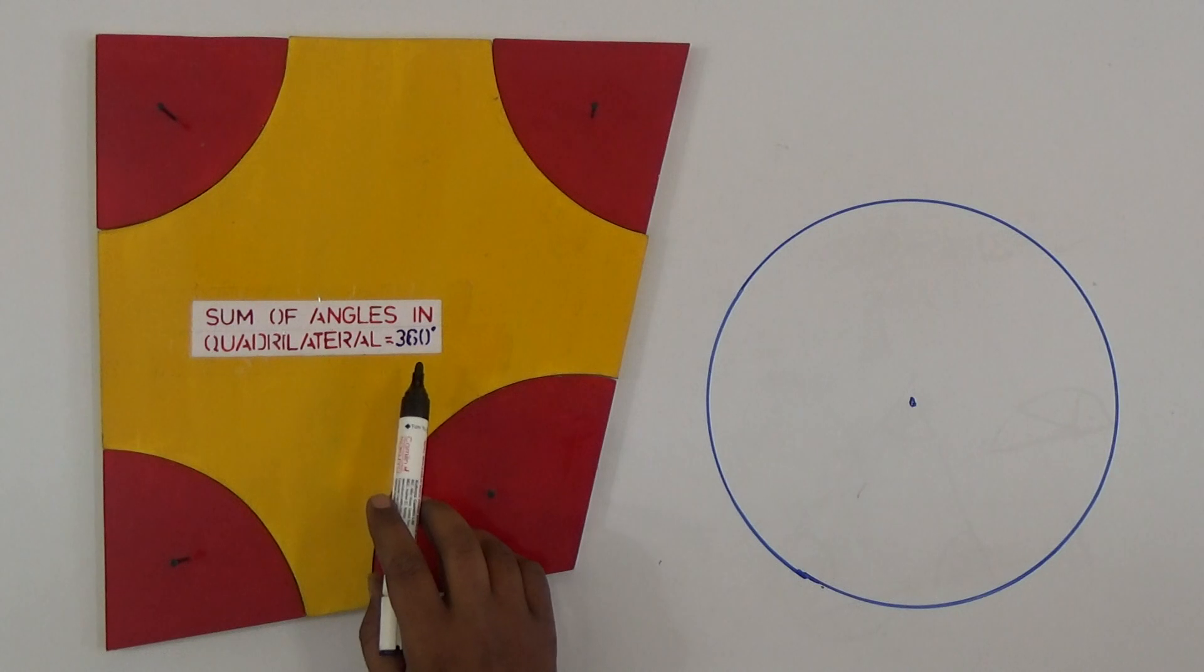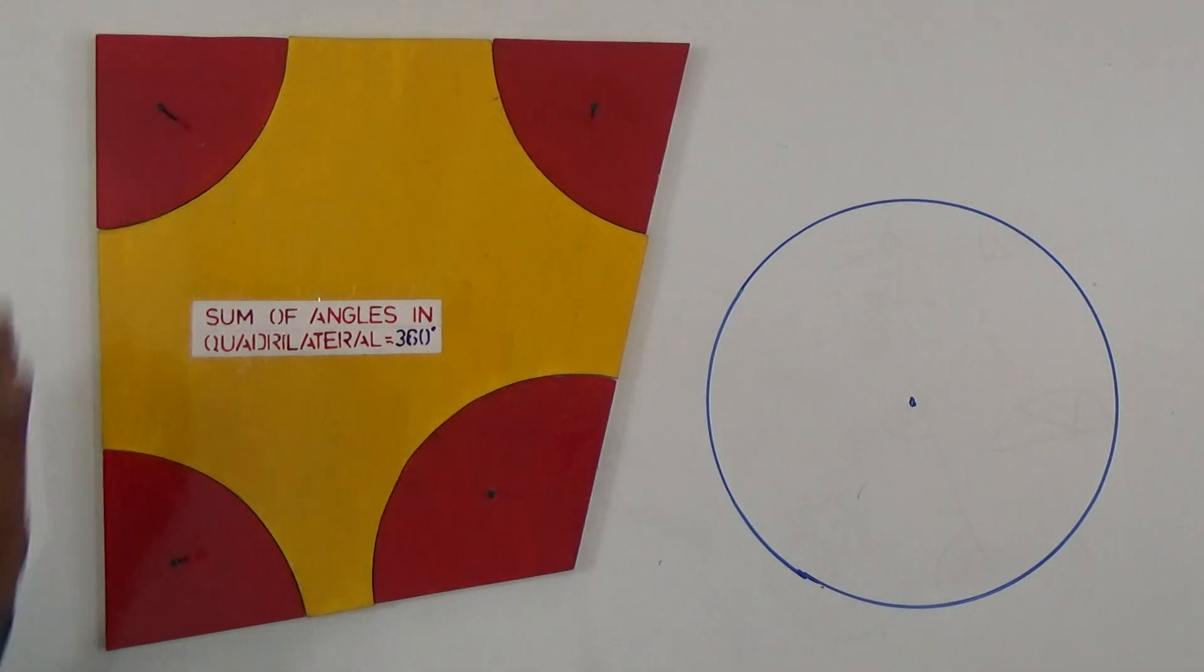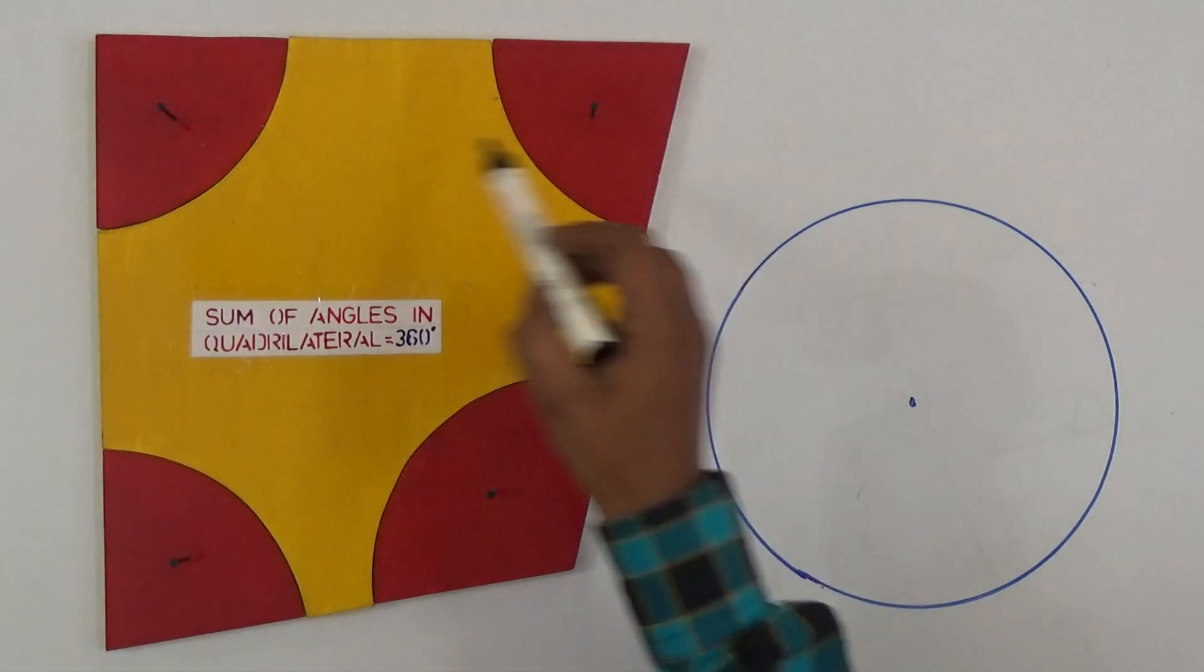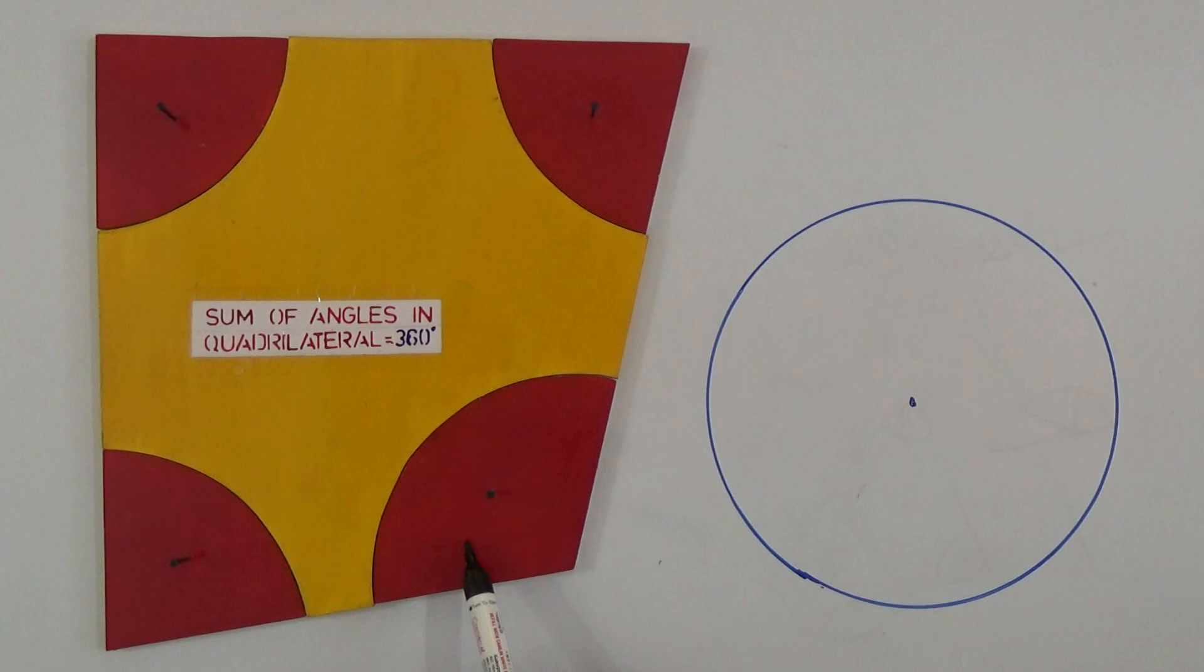I will show you now in practical. I took a quadrilateral shape with four angles: one, two, three, four. The sum of the four angles if I add it should be equal to 360 degrees.